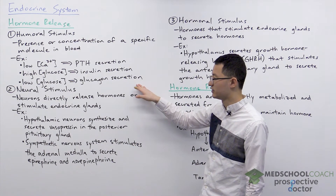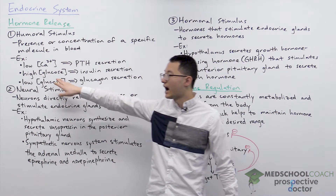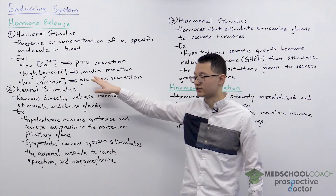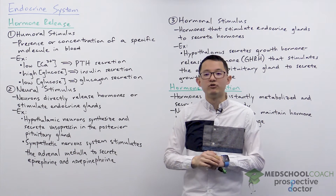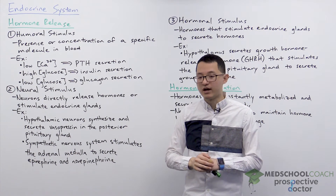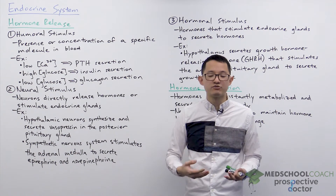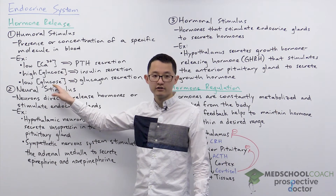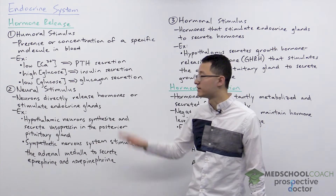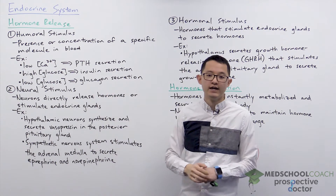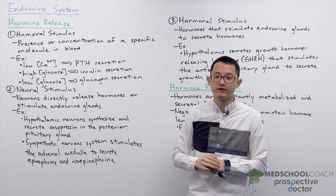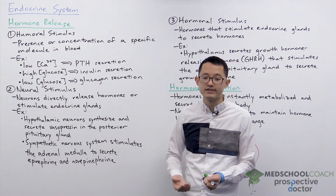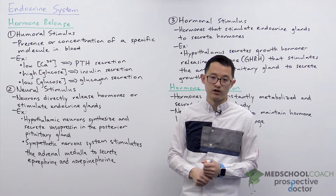A couple more examples: high blood glucose concentrations will stimulate the pancreas to secrete insulin. Insulin will increase blood glucose uptake from cells and help lower blood glucose levels. Low blood glucose concentrations will stimulate the pancreas to secrete glucagon. Glucagon will act on the liver to stimulate gluconeogenesis and glycogenolysis to help increase blood glucose concentrations.